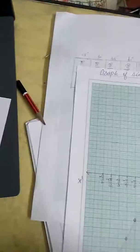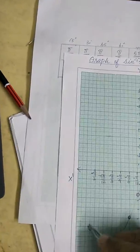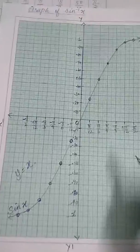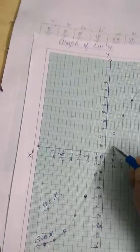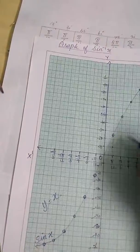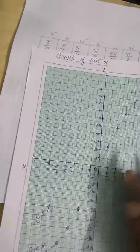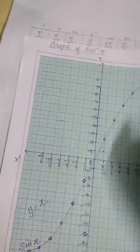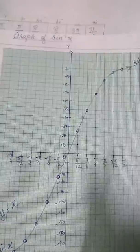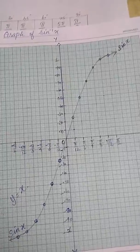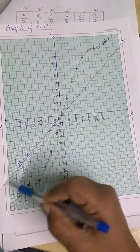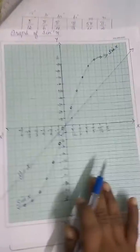Now I am going to draw the graph of y equal to x. For y equal to x, the points are: 1 maps to 1, 2 maps to 2, 3 maps to 3, 4 maps to 4, 5 maps to 5. We get a straight line through the origin. This is the y equal to x line.